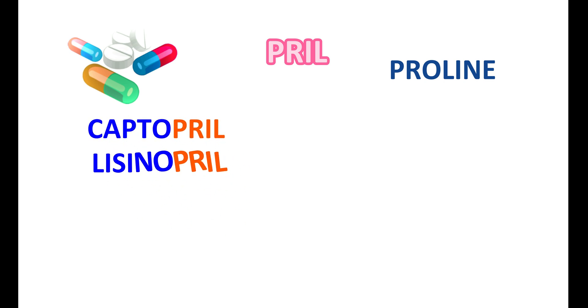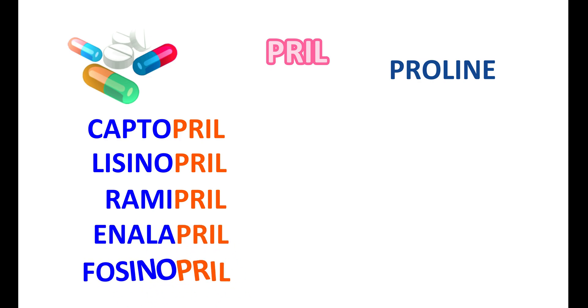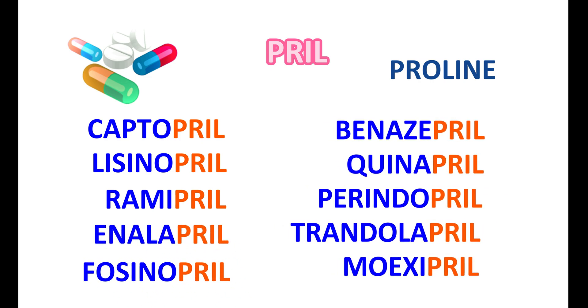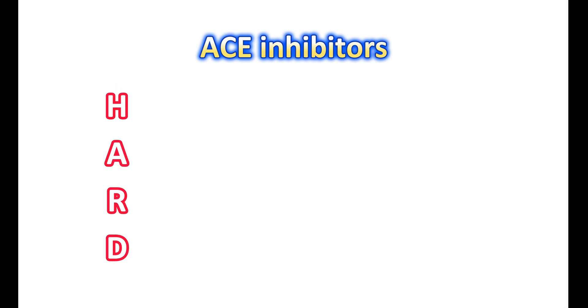We have so many types of drugs like Captopril, Lisinopril, Ramipril, Enalapril, Fosinopril, and so on. Among these, Trandolapril and Benazepril are widely used ACE inhibitors. ACE inhibitors produce HARD effects: H indicates hyperkalemia, A is angioedema, R is renal failure, and D is dry cough.